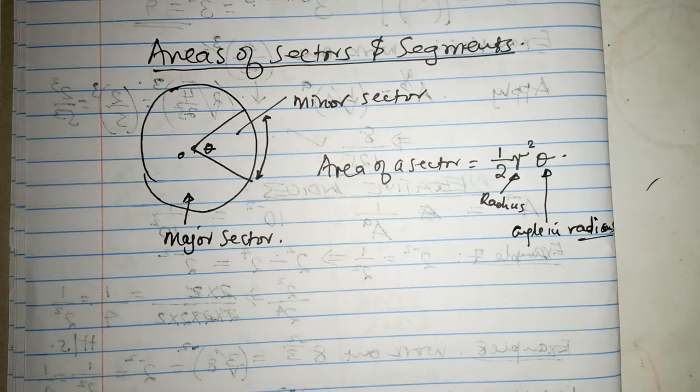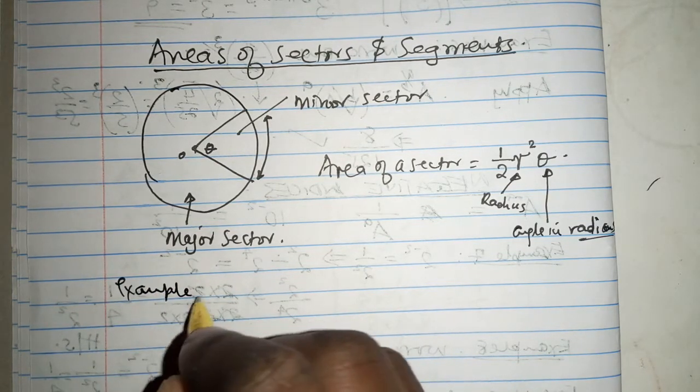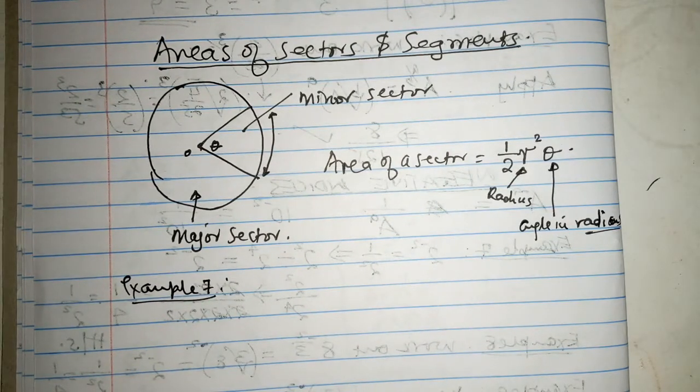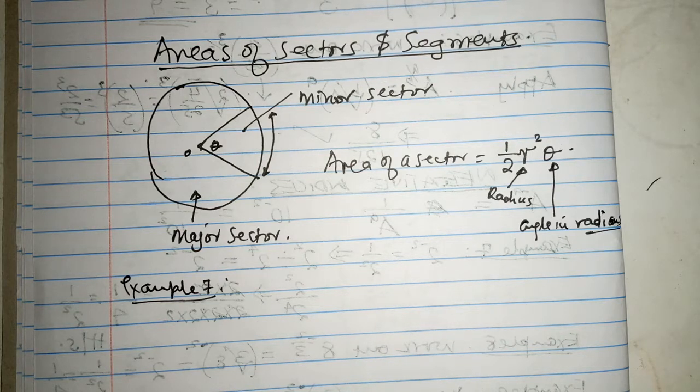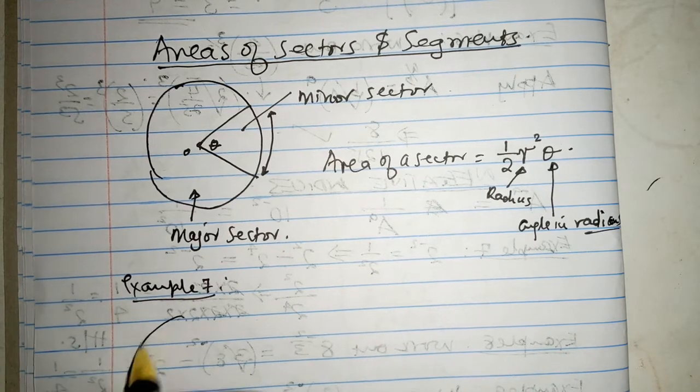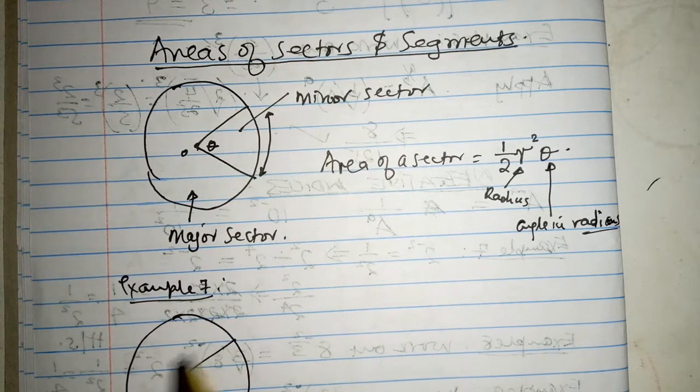And we just go to example 7. Let's first of all, let's just run to example 7 and see what's happening. And in example 7, we're supposed to find the area of a sector of a circle of radius 2.44 centimeters, given that the sector subtends an angle of 1.4 radians at the center of the circle. So, we are told that we have such a circle, there is the center, there is the radius,